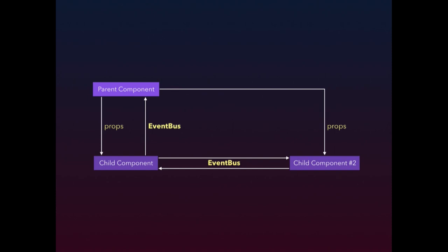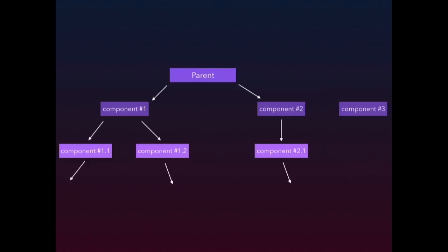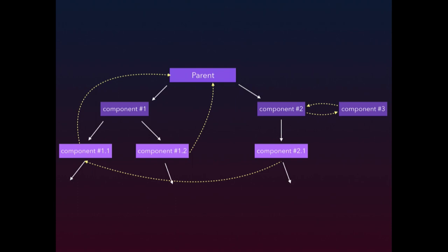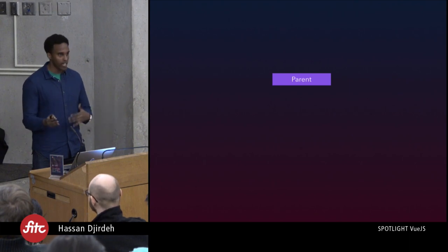The only issue is most applications don't look this simple — they look more complex. Let's assume all white lines represent props being passed downwards, and components like 1.1 need to notify the parent, while 2 and 3 need to share information. Things get complicated quickly. The Vue.js style guide actually recommends not using an EventBus for application-wide state management, because though it's incredibly easy to set up, things get hard to track — especially since a single user interaction can affect multiple discrete parts of your app.